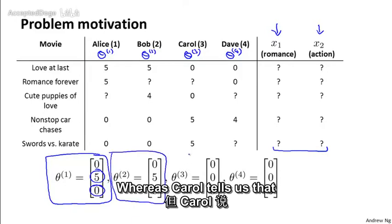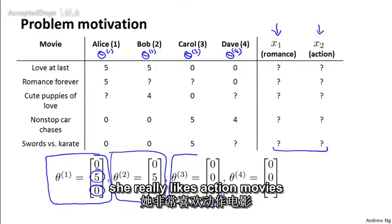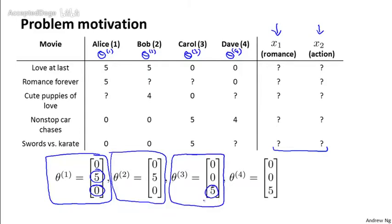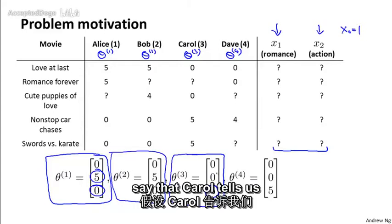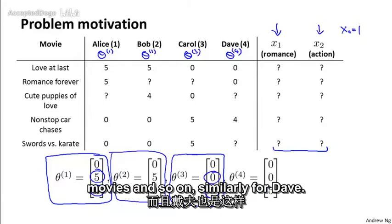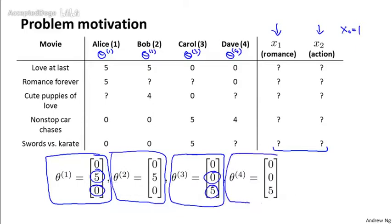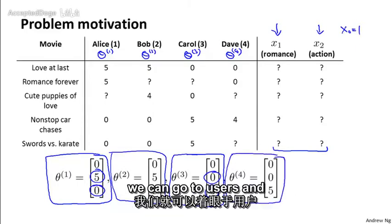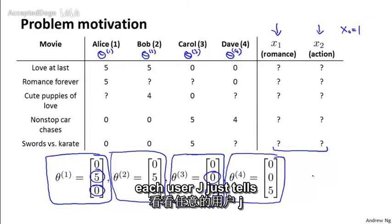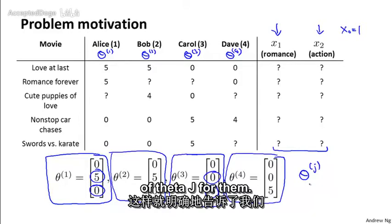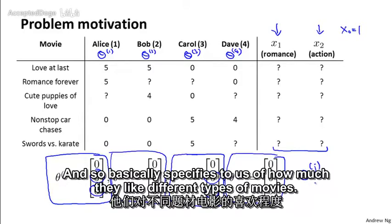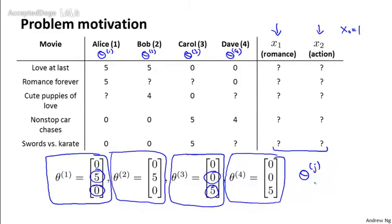Whereas Carol tells us that she really likes action movies, which is why there's a 5 there. That's the multiplier associated with x2. Remember there's also x0 equals 1. And let's say that Carol tells us she doesn't like romantic movies and so on. Similarly for Dave.